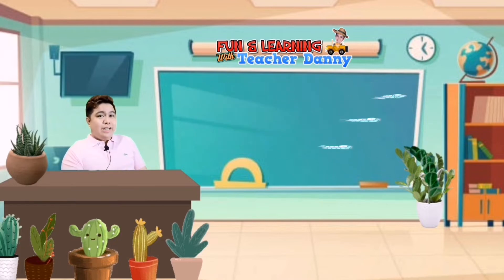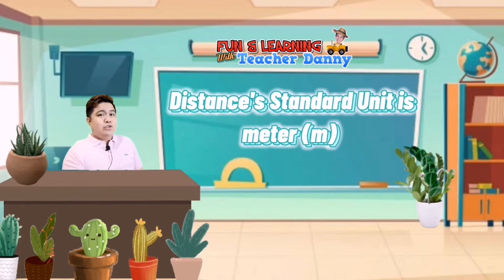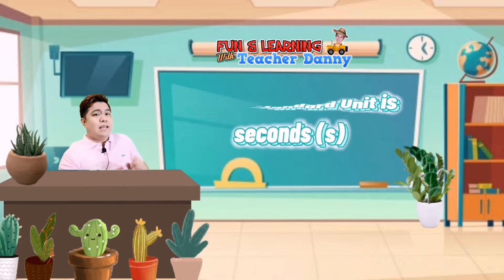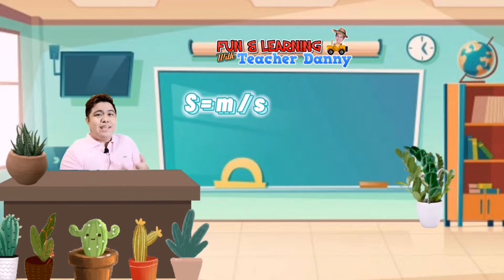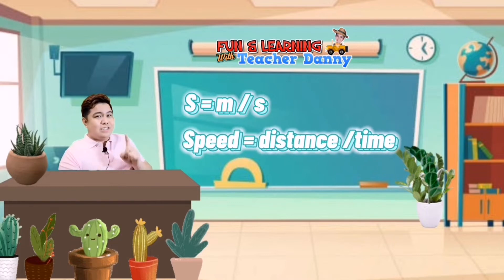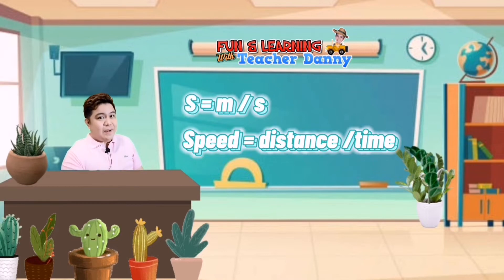Distance, as we have learned, has a standard unit called meter. And time is usually in seconds. So we may notice that speed is usually expressed in meters per second. That simply means that speed is equal to distance divided by time.